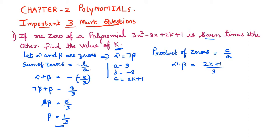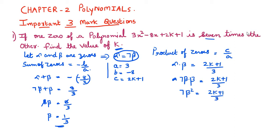Since alpha equals 7 beta, we substitute: 7 beta times beta equals (2k plus 1) by 3, giving 7 beta² equals (2k plus 1) by 3. Substituting beta equals 1 by 3: 7 times (1 by 3)² equals (2k plus 1) by 3, so 7 by 9 equals (2k plus 1) by 3.